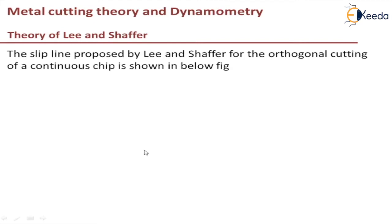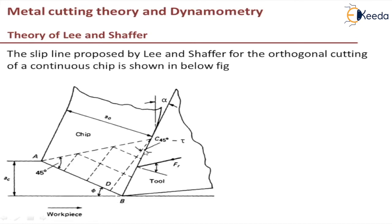The slip plane proposed by Lee and Schaffer for orthogonal cutting of a continuous chip is as shown in the figure below. This is the slip line proposed by Lee and Schaffer — you can see zone A, B, C. The slip lines are at angles of 45° and 135°, because the shear stress is maximum at 45° and 135°. These are the slip lines where the shear stress is maximum.